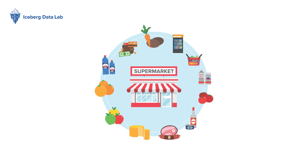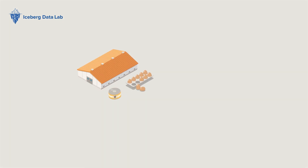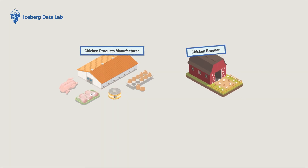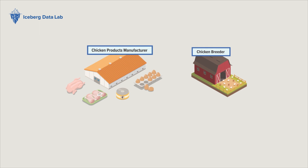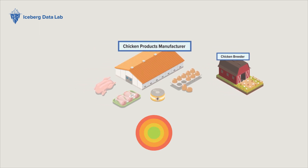Among foods, meat is one of the items that are both most sold and most impactful, so we can use it as a case study to trace its value chain and see how it contributes to supermarkets' impact. The impact of the chicken sold by our supermarket is cumulative of the impact of its whole supply chain, from the raising of the live animal to the manufacture of the meat product. A company that manufactures chicken products and sells them to supermarkets has a CBF of about negative 800 square kilometers MSA.